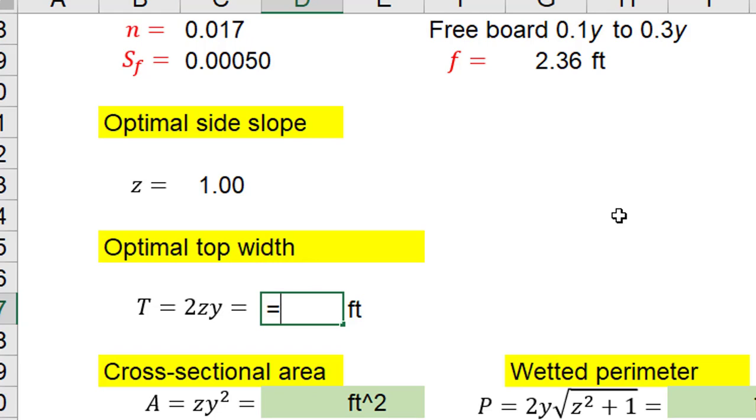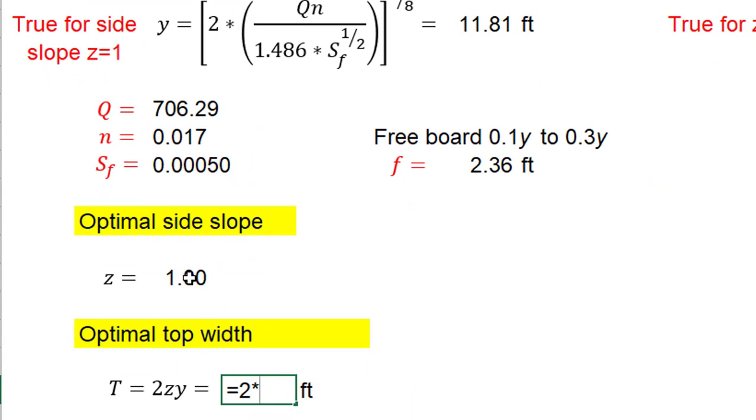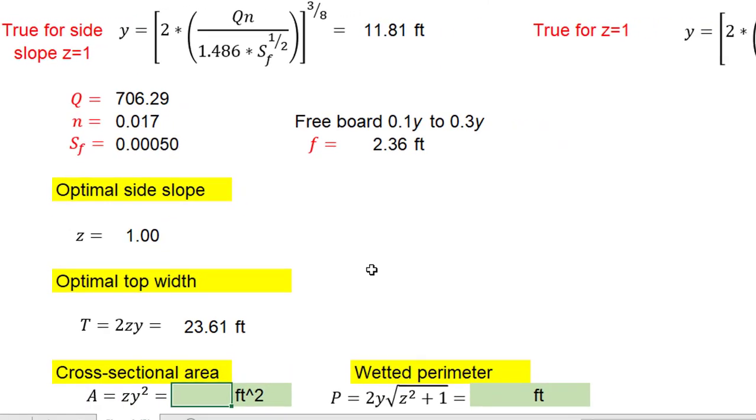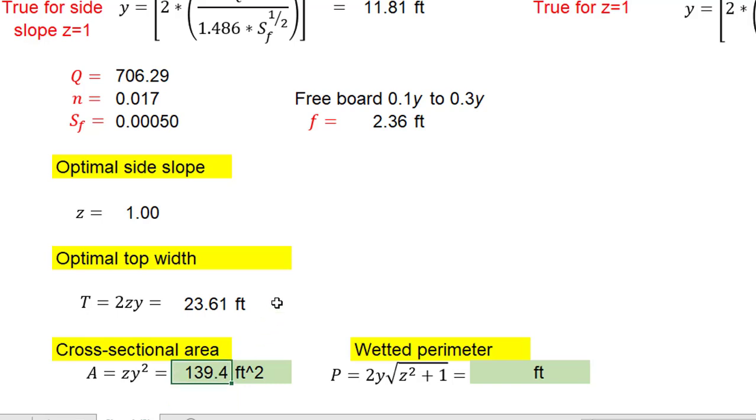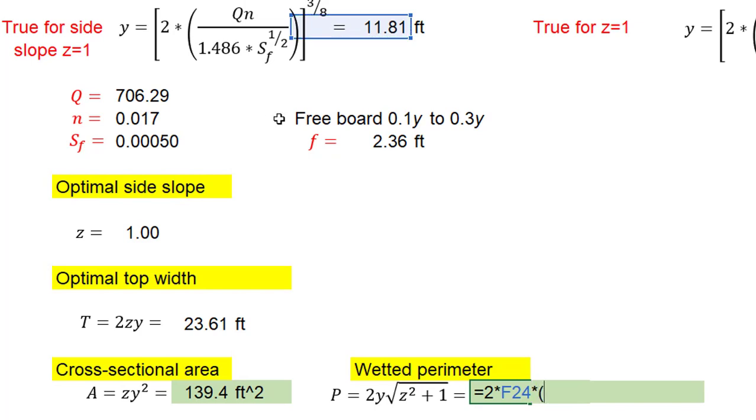The optimal top width is equal to 2 times side slope times water depth. The top width is equal to 23.61 feet. The cross sectional area is equal to side slope times water depth squared equal to 139.4 square feet. And the wetted perimeter is equal to 2 times water depth times side slope squared plus 1 to the power of a half.